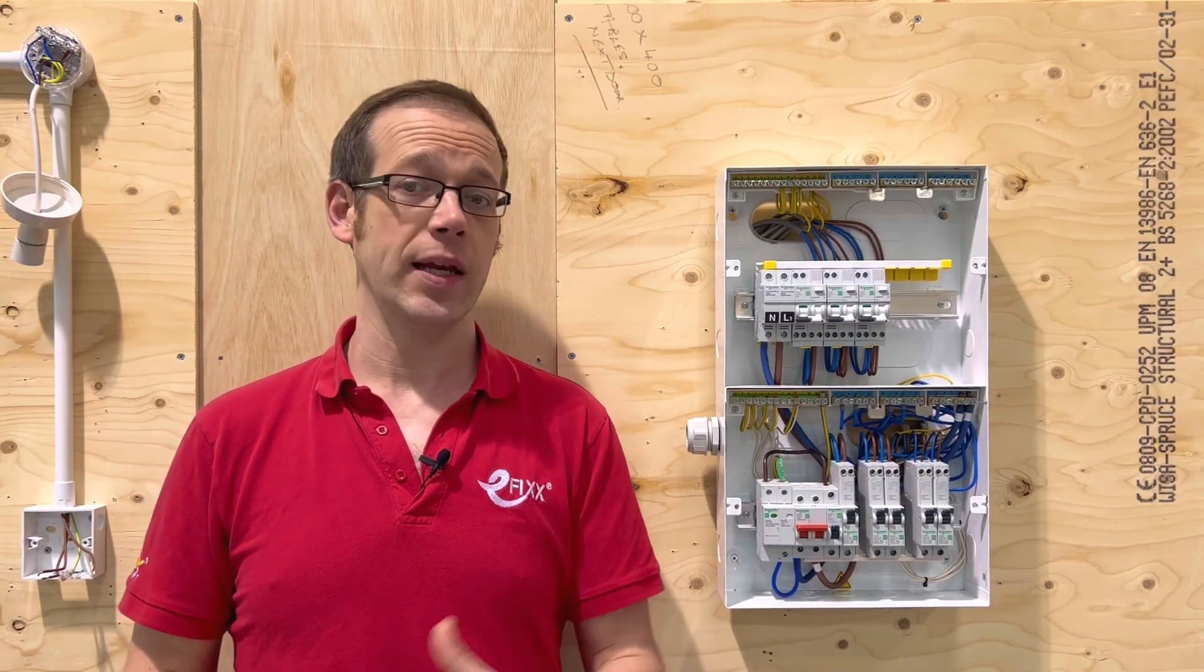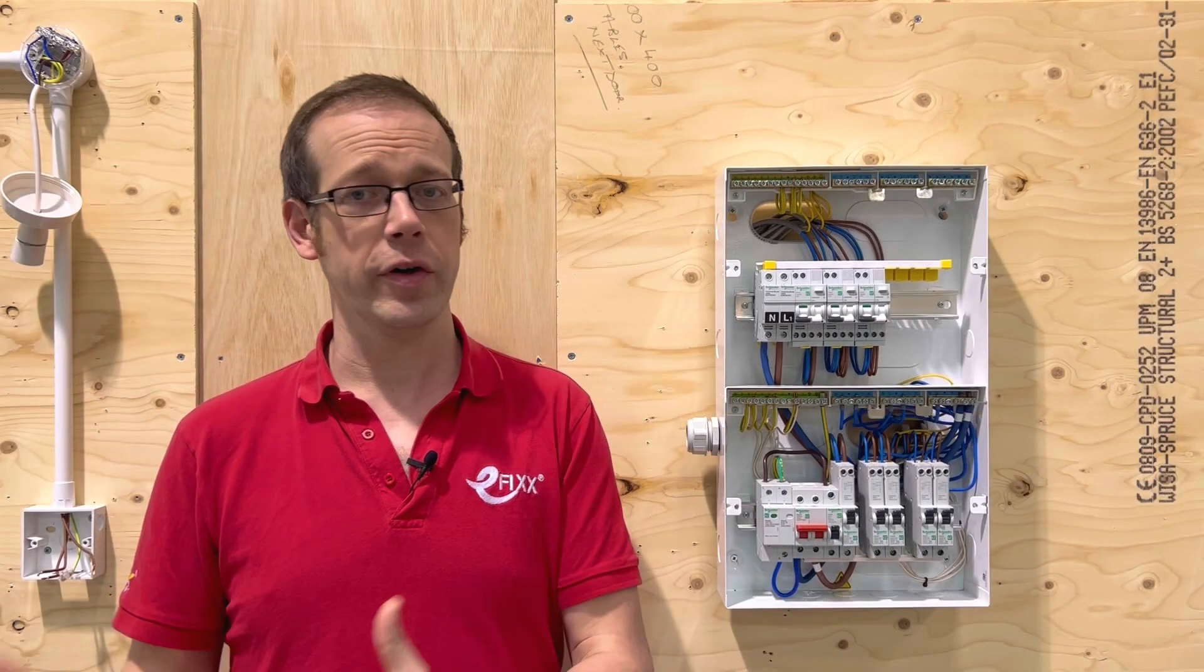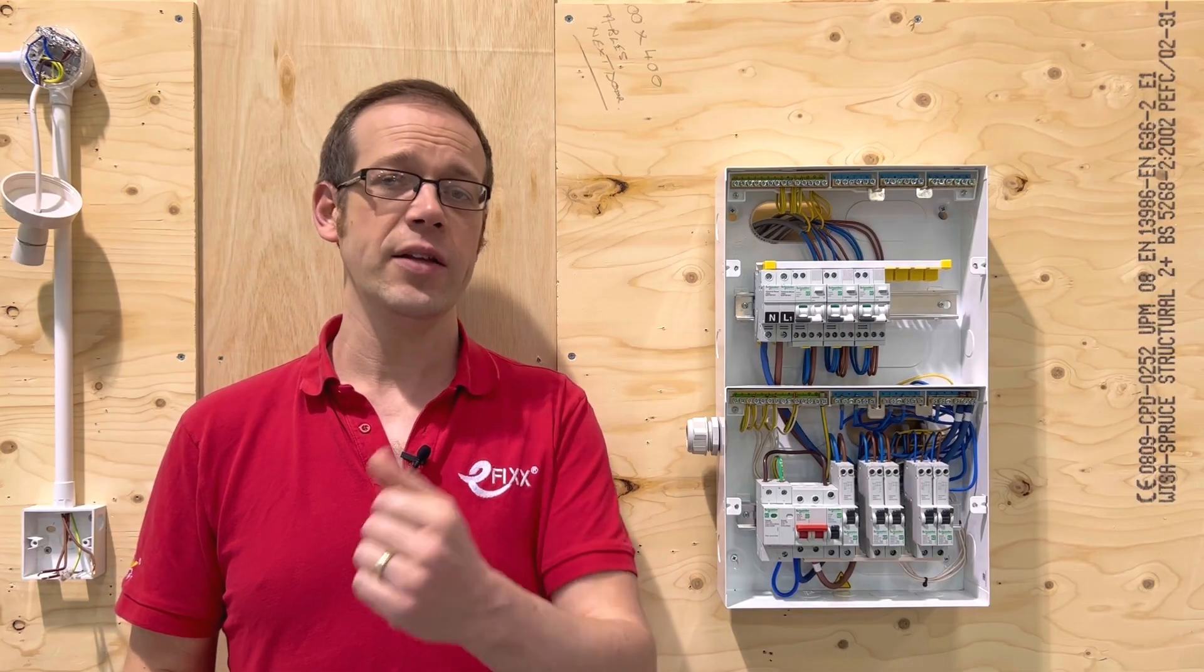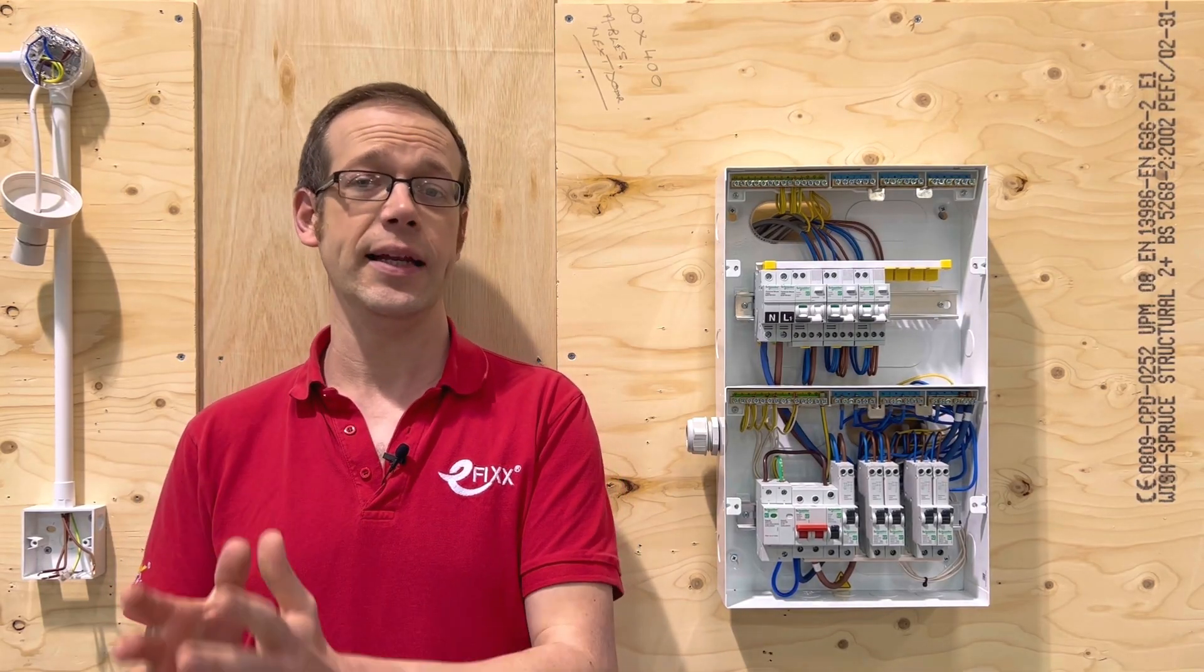This is then borne out in the next regulation 415.1.2 states that the use of RCDs is not recognized as a sole means of protection and does not obviate the need to apply one of the protective measures specified in sections 411 to 414. So we still need to use insulation, overcurrent protection and so on as well as using RCDs for additional protection. We can't just rely on the RCD alone.